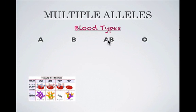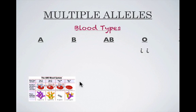Since A and B are co-dominant and O is a recessive allele, we can talk about this in terms of genotypes. We're going to use the I designation. In the chart they use just A's, B's, and O's, but generally in textbooks you're going to see I's used. I like to think of the I's as representing your blood cell and what kind of protein marker it has.